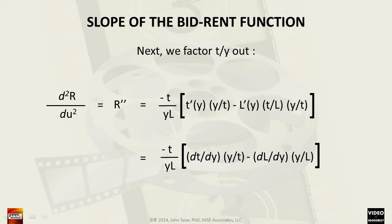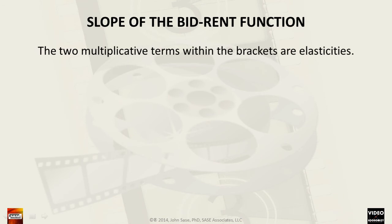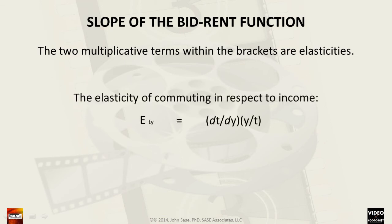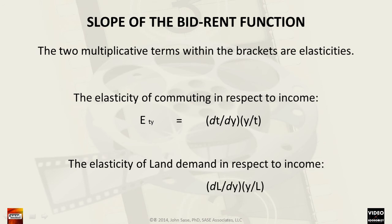Put more simply, the second derivative that expresses the rate of change in respect to radial distance equals the negative of the ratio of the commuting cost to the product of income times the quantity of land demanded, times the quantity of the difference between the income elasticities for commuting cost and land demanded. The two terms within the brackets are the elasticities: the first one is the income elasticity of commuting cost, and the second one is the income elasticity of land demanded.